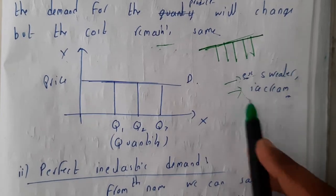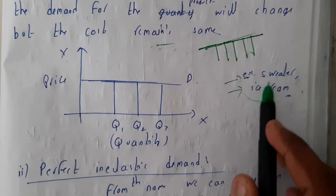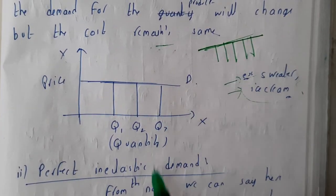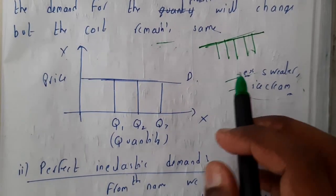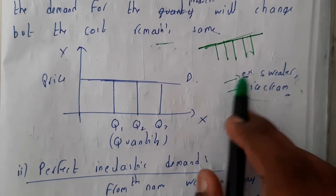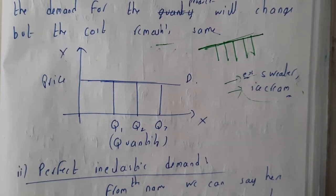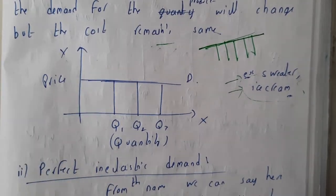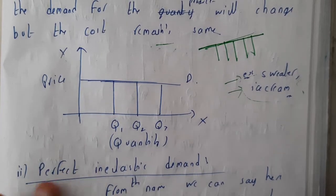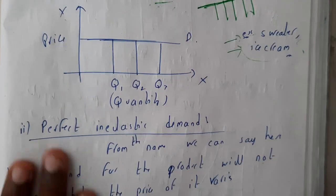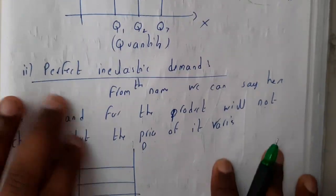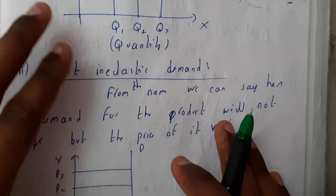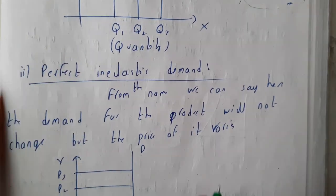Sweaters and ice creams are not commonly bought at the same time. Sweaters are bought mostly in winter and ice creams mostly in summer, though some people eat ice cream at any moment. Now, perfect inelasticity of demand is the opposite of perfect elasticity.